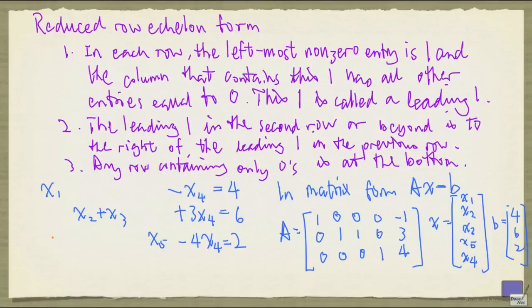In the next video, we will look at a mechanical procedure for solving a system Ax equal to B, that brings it to an equivalent system Rx equal to D, where R is in reduced row echelon form.